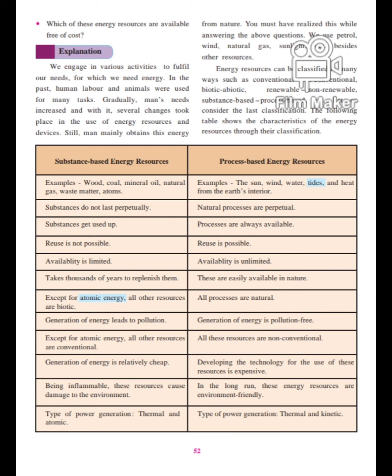Substances do not last perpetually. Wood — once you burn it as a fuel, it turns into ash and you cannot get it back. The same applies to coal. So these substances do not last long. Substances get used up — once burned, they get used up and you cannot renew them. Reuse is not possible: once the wood is burned, you cannot reuse it; you have to cut another piece of wood if you want energy. So reuse is not possible in substance-based energy resources.